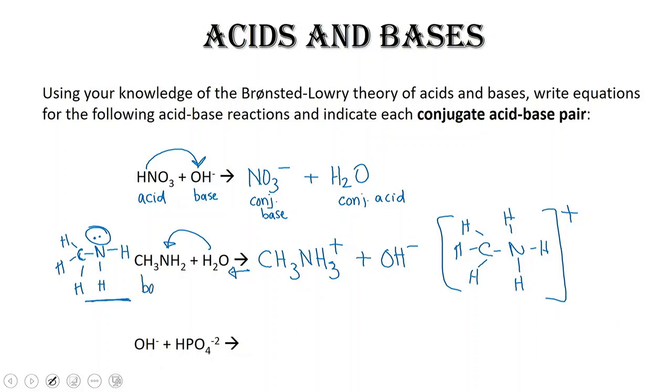We've got a base plus water, which is our acid. And since this base gained a hydrogen, or a proton, we're going to call this the conjugate acid. And hydroxide is always going to be the conjugate base of water.